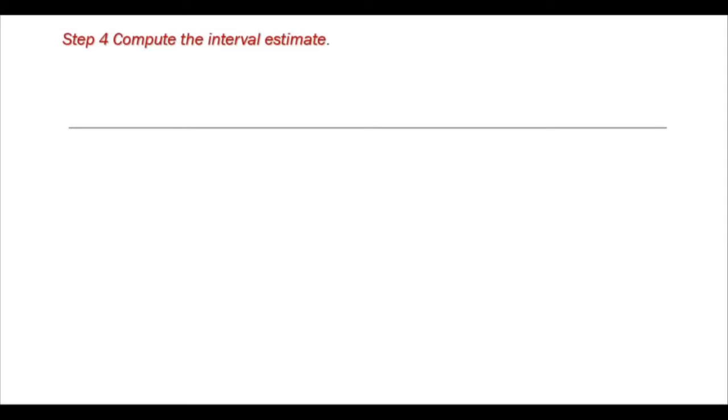Step 4: Compute the interval estimate. Find q hat. So q hat equals 1 minus p hat, and 1 minus 0.45 is 0.55.